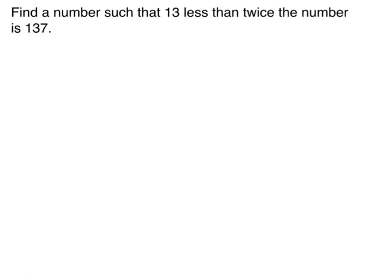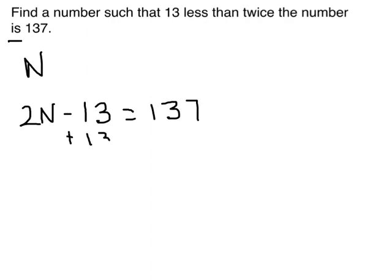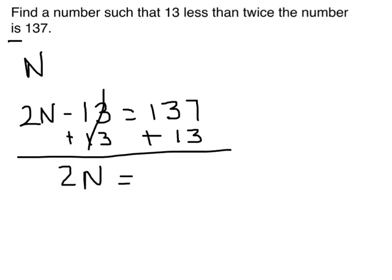This says find a number. So for a number we're going to let that be N. It's going to represent a number. Such that 13 less than twice the number. Twice the number. 13 less than that is 137. So let's work this out and see what happens. We have a negative 13. We want to eliminate that. So we're going to add 13 to both sides. When we do, we get 2N equals 150. If we eliminate the 2, we have N equals 75.